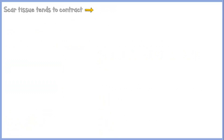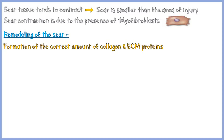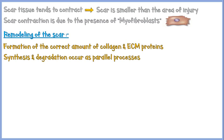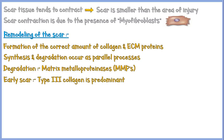After forming, scar tissue tends to contract; therefore, the size of the scar is usually smaller than the area of injury. Scar contraction is mainly due to the presence of myofibroblasts, which have contractile properties. Formation of the correct amount of collagen and extracellular matrix proteins is called remodeling of the scar. During remodeling, synthesis and degradation of these proteins occur as parallel processes. Degradation is mainly due to matrix metalloproteinases. In the early days, the predominant collagen is type 3, and towards the end, it is replaced by type 1 collagen.